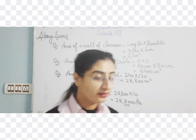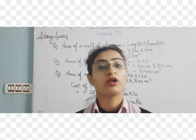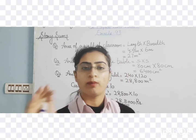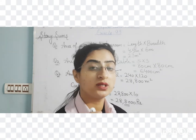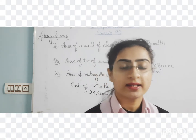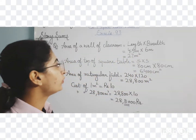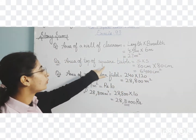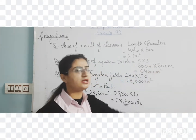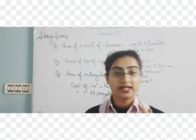Next question: find the area of the top of a square table whose side is 80 cm. The table is square-shaped, so area of square equals side into side. Putting it in the formula: area equals 80 multiplied by 80, that is 6400 centimeter square.